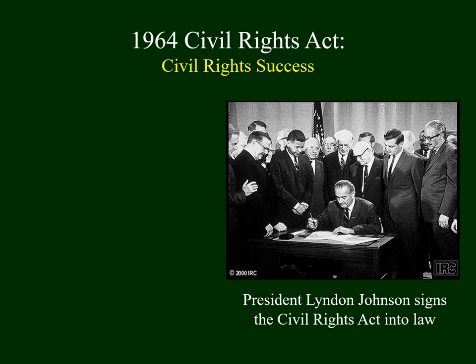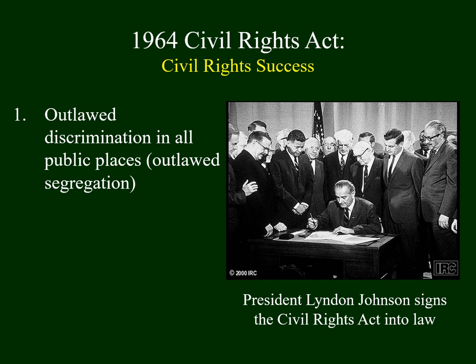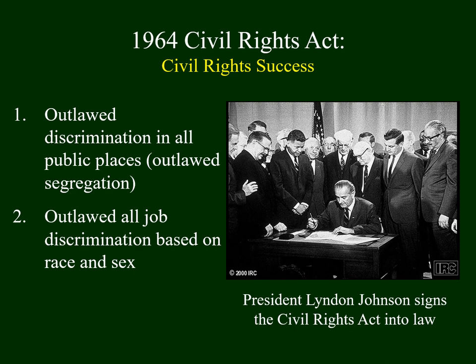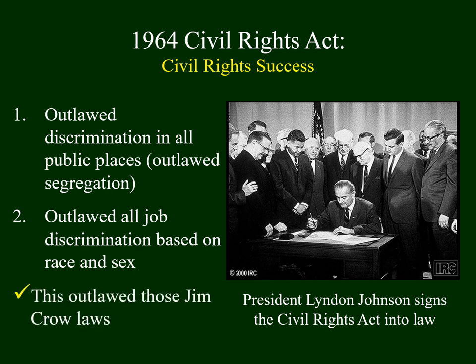Eventually, Congress took action and passed the Civil Rights Act of 1964. This outlawed or prohibited discrimination in all public places — essentially, it outlawed segregation. Secondly, it outlawed job discrimination based on race and sex. We see Lyndon Johnson signing the bill into law. What this did was finally outlaw those Jim Crow laws, about 100 years after the end of the Civil War.